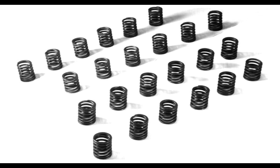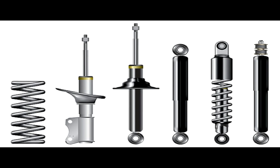Springs are made from a variety of elastic materials, the most common being spring steel. Small springs can be wound from pre-hardened stock, while larger ones are made from annealed steel and hardened after fabrication. Some non-ferrous metals are also used, including phosphor bronze and titanium for parts requiring corrosion resistance, and beryllium copper for springs carrying electrical current, because of its low electrical resistance.